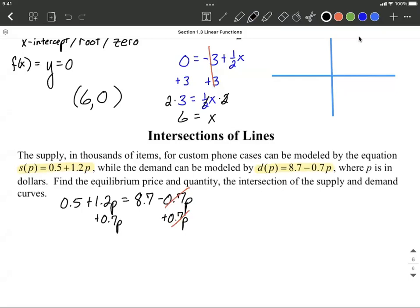Now we can combine like terms. We have 0.5 plus 1.9p's now equals 8.7. All the variable terms are on the left side. Let's move the constant terms to the right side. So subtract 0.5. Again, combining these like terms makes 0. This will give us 1.9p equals 8.2.